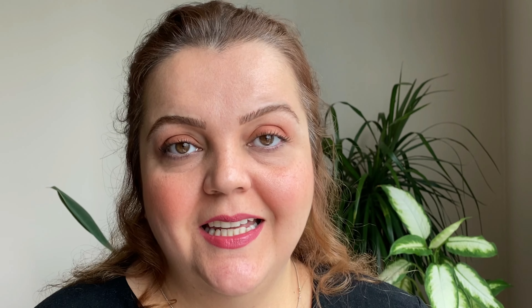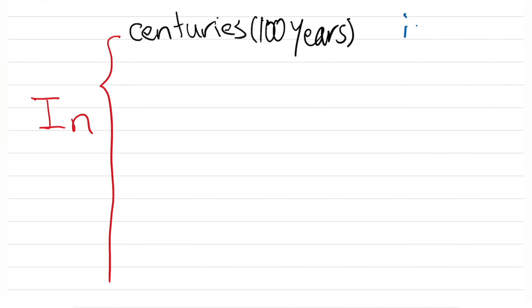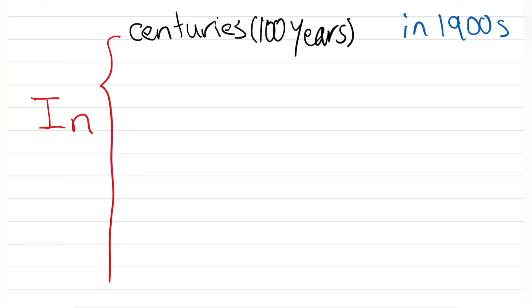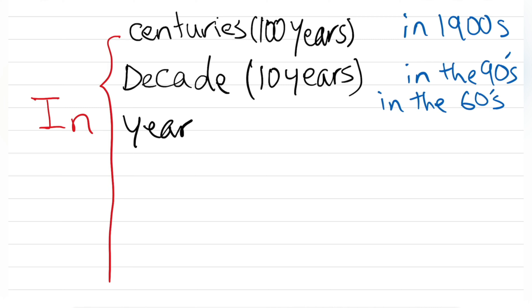First, IN is used with centuries — which means 100 years. For example, we say 'in the 1900s.' Then we have decades, which are 10 years. For decades we also use IN — for example, 'in the 90s' or 'in the 60s.' We also use IN with years themselves.